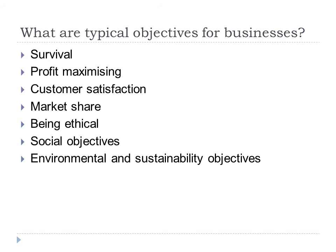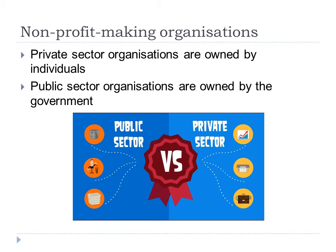Some businesses operate to help the community, and larger businesses will want to demonstrate they're operating ethically, with social objectives that help people in their local area. Other businesses have environmental objectives, which are increasingly important. Some businesses are non-profit — they're not looking to make a profit — and their objectives are more service and satisfaction-based, providing things for the local community rather than focusing on profit.